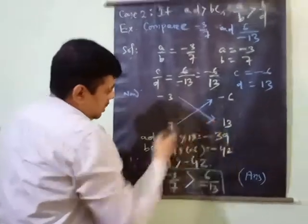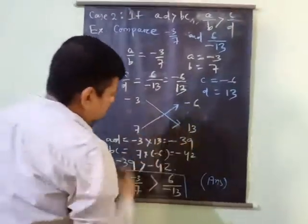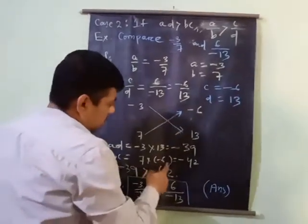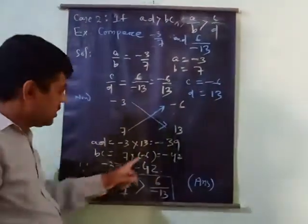A into this is multiplied by this, so minus 3 into 13, which is minus 39. BC is equal to 7 into minus 6, which is minus 42.